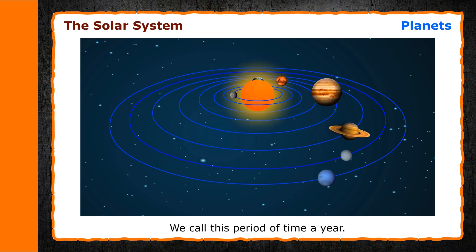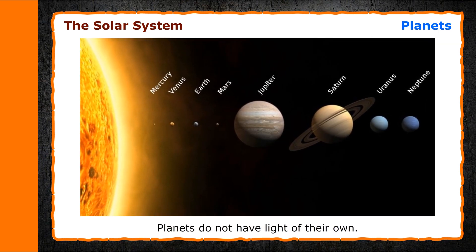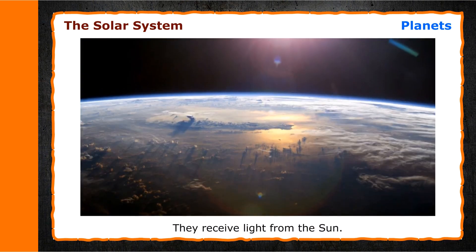Planets do not have light of their own. They receive light from the Sun.